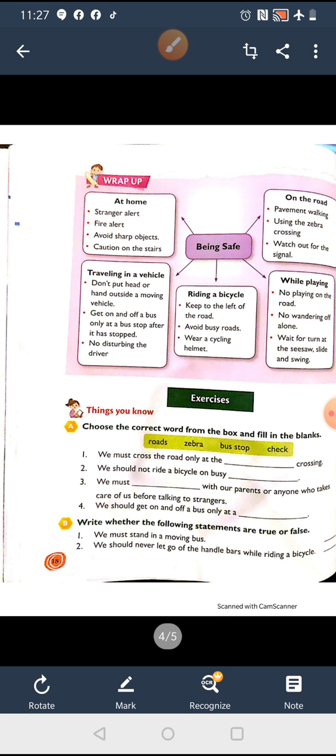This chapter is about learning to keep ourselves safe everywhere. We should not play with sharp objects, we should be alert while talking to strangers, we should take precautions while walking on the road or riding a bicycle, and we should watch for traffic signals.